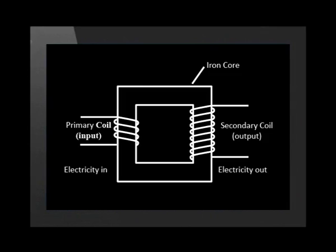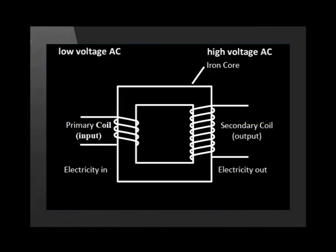Remember, alternating current is better than direct current for long distances because it can be used in a transformer to change the voltage. The alternating current in the primary coil creates a constant change in magnetic flux in the secondary coil. Because the secondary coil has more turns, according to Faraday's law, more voltage comes out of the transformer — we call this a step-up transformer.